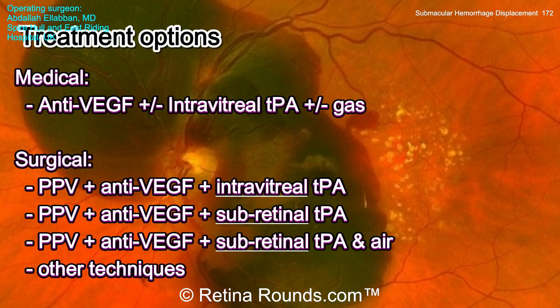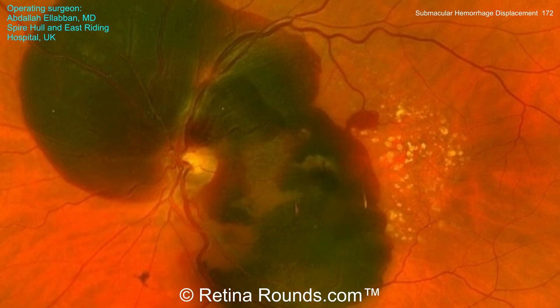For more extensive hemorrhage, as in this case, intravitreal TPA with or without an intravitreal injection of an expansile gas bubble could be considered. Surgical options include pars plana vitrectomy with either intravitreal or subretinal anti-VEGF injection, and either intravitreal TPA, subretinal TPA, or subretinal TPA and air. Let's see what Dr. El-Aban does.